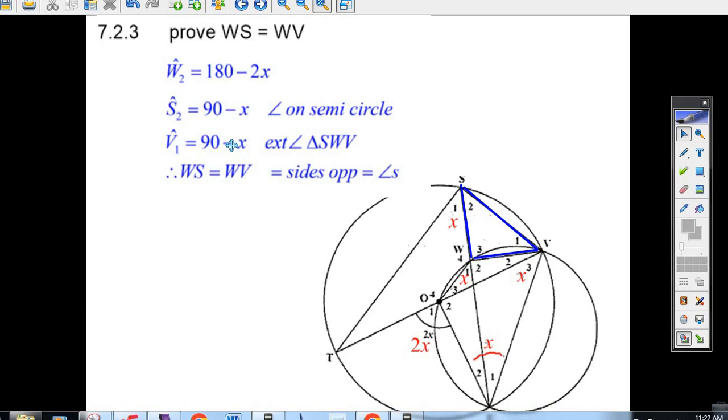Well, if these two angles are equal, therefore WS must be the same length as WV because you've got equal sides opposite these equal angles. And that's the way it works.